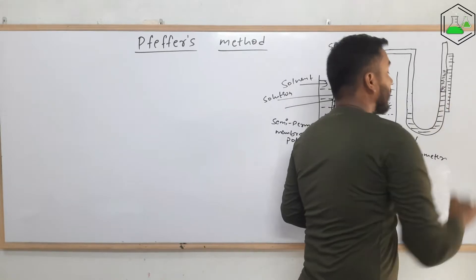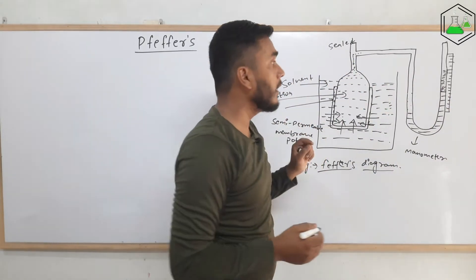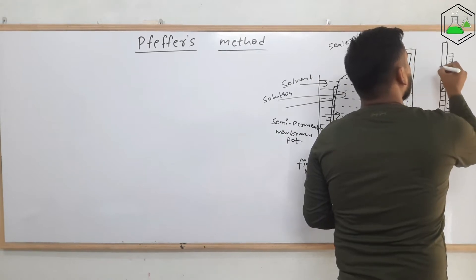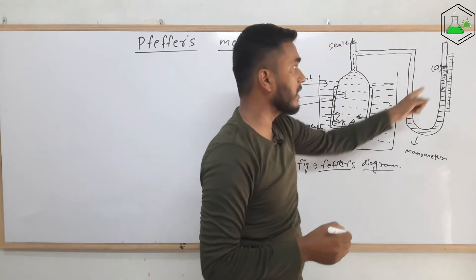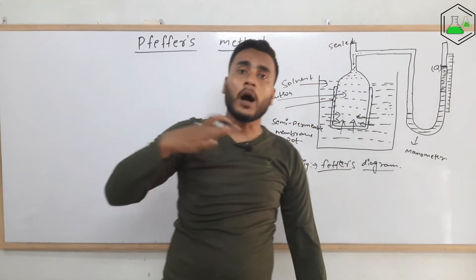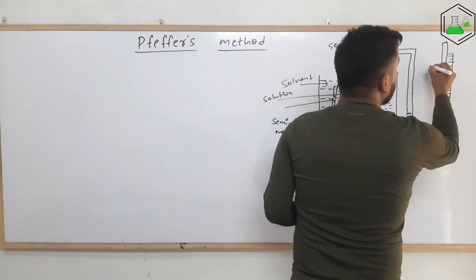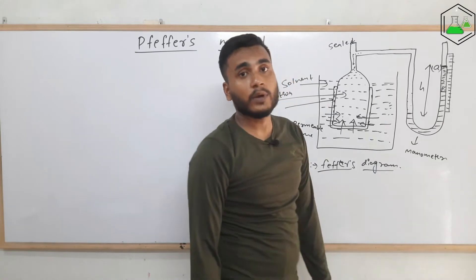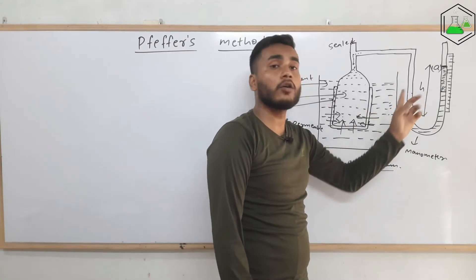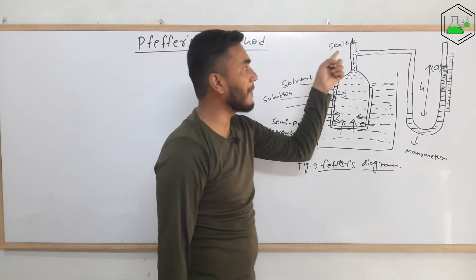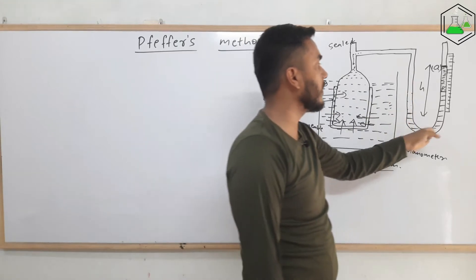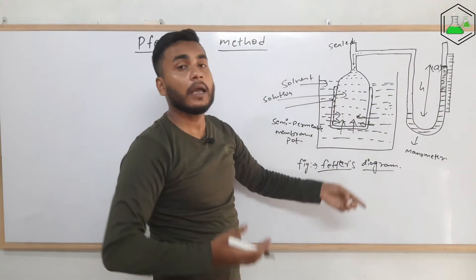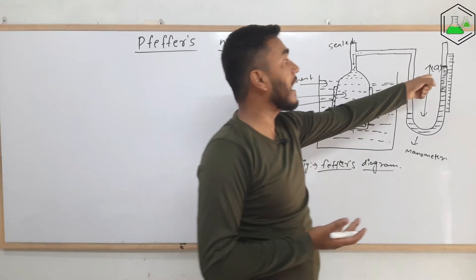This phenomenon will keep on happening, meaning pressure is being generated. There will be a time when this phenomenon stops — at that point, let's say point A, the mercury level in the right side of the manometer will not go further up. We can then measure the height difference, and that gives us the information about the pressure generated, which is equal to the osmotic pressure when the height is at its maximum.